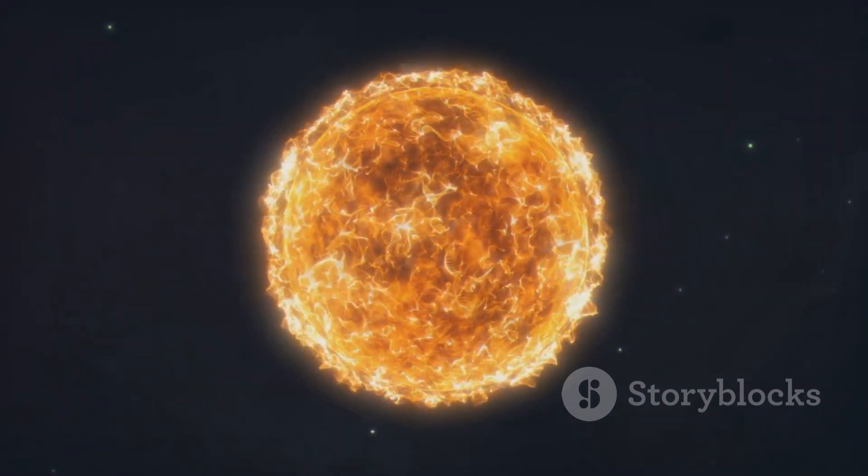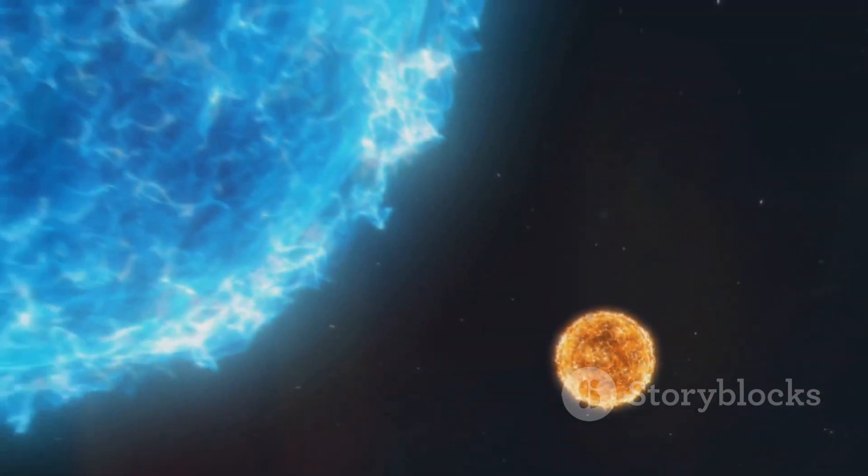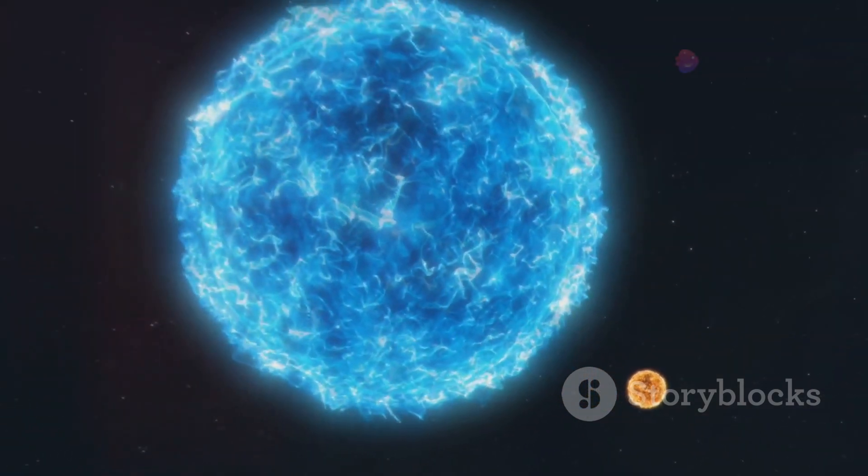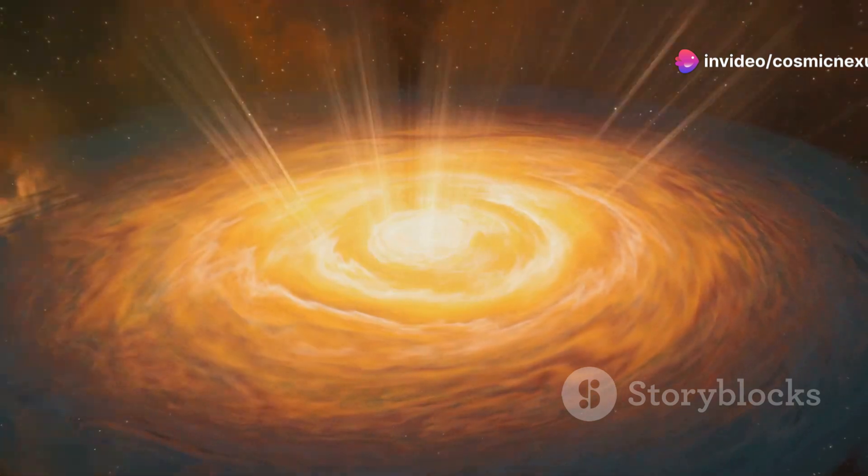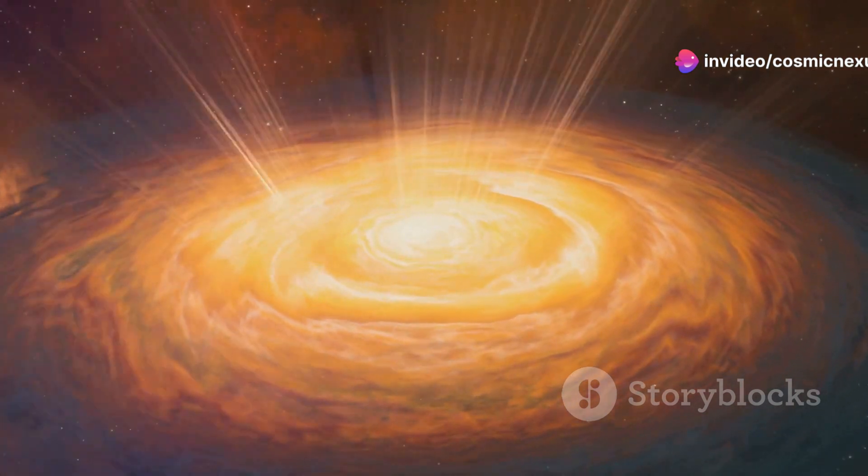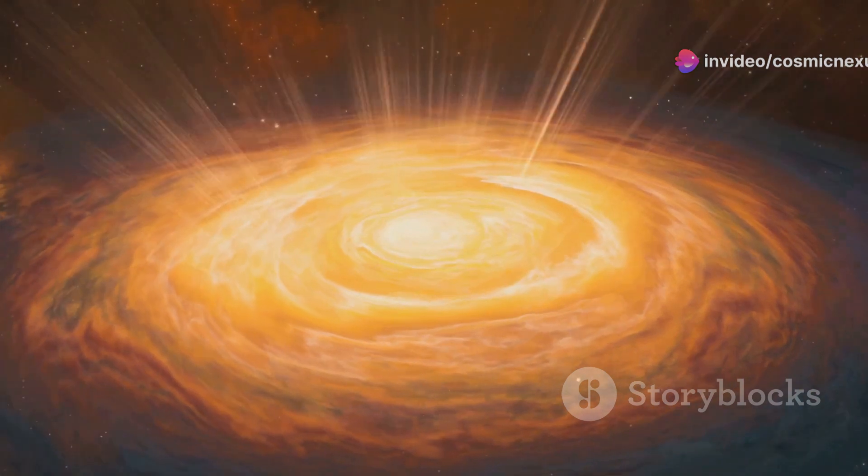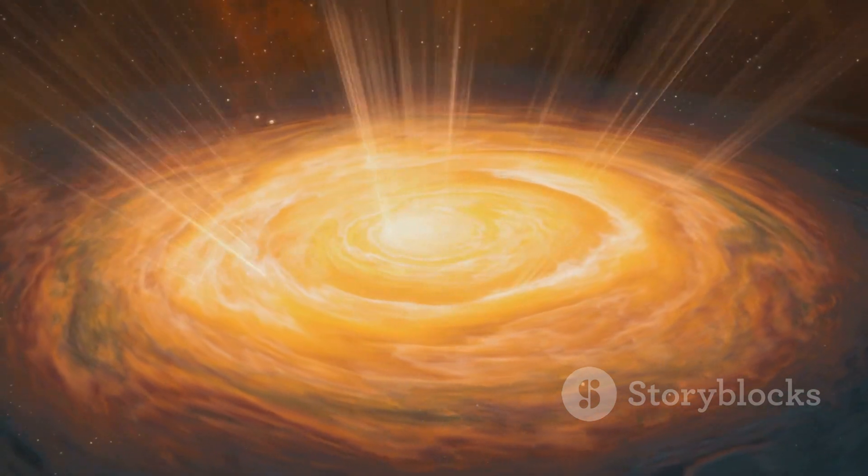If we swapped them, Betelgeuse would stretch out beyond Mars' orbit. This gives you an idea of just how massive this star is. Red supergiants are like cosmic pressure cookers, constantly churning with activity as they fuse heavier and heavier elements in their cores.